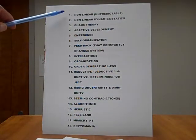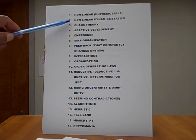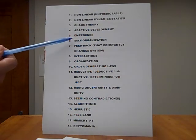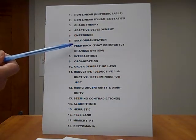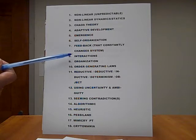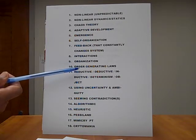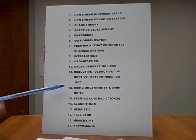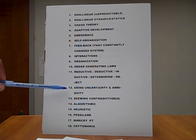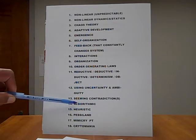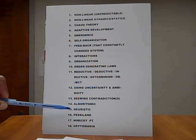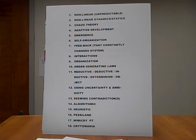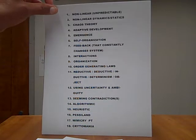Each word below can be used to write a 500-page book in the context to complexity and the complex. Each word is a complexity factor unto itself. These words such as, number one, non-linear, unpredictable. Number two, non-linear, dynamics and statics. Three, chaos theory, adaptive development, emergence, self-organization, feedback that constantly changes the system, interactions, number nine, organization, order generating laws. Number ten, irreductive, deductive, inductive, determinism, objects. Number twelve, using uncertainty and ambiguity, seeming contradictions, algorithmic heuristic.